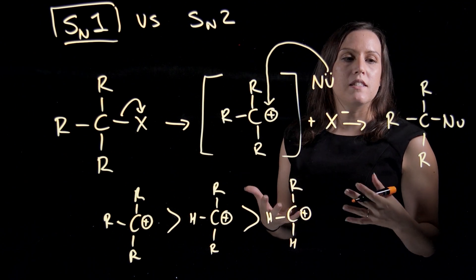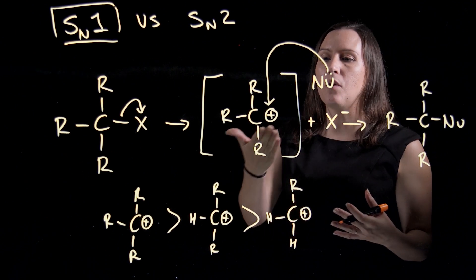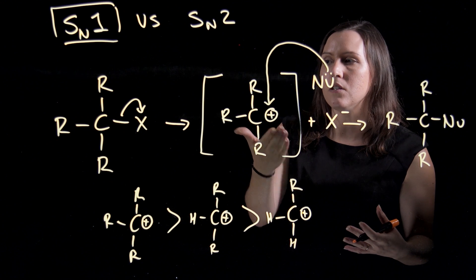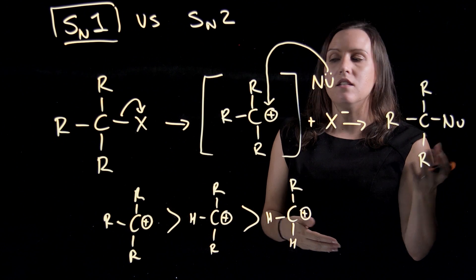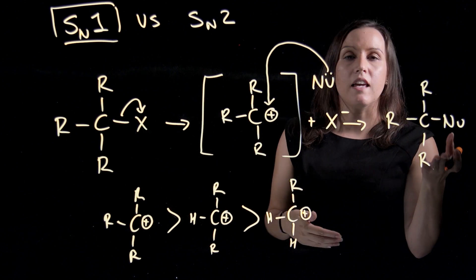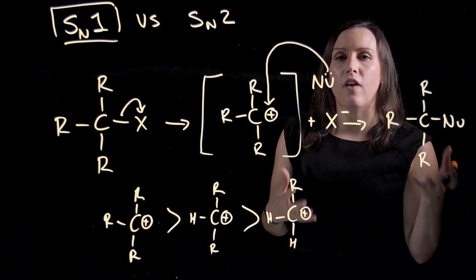So what you can see here is that we have a carbocation being formed. If this is a chiral compound at the beginning, then at the end, say this is an R, at the end we will get a 50-50 mixture of R and S.